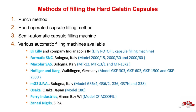Methods of filling hard gelatin capsules: 1. Punch method; 2. Hand-operated capsule filling method; 3. Semi-automatic capsule filling machine; 4. Various automatic filling machines. Available automatic machines include: Lilly and Company (Indianapolis) Lilly Rotterfill; Pharmatic SNC (Bologna, Italy) Models 2000/15, 2000/30 and 2000/60; Maker Farsas (Bologna, Italy) Mount 12, Mount 13/1 and Mount 13/2; Horfliger and Kog (Weiblingen, Germany) Models GKF 303, GKF 602, GKF 1500 and GKF 2000; MG2 SPA (Bologna, Italy) Models G36/4, G36/2, G36, G37N and G38; Oseka (Japan) Model 180; Peri Industries (Green Bay, WI) Model C; Xenocinigris SPA.